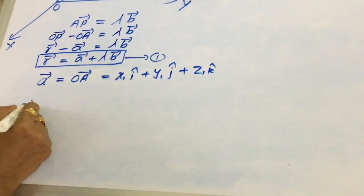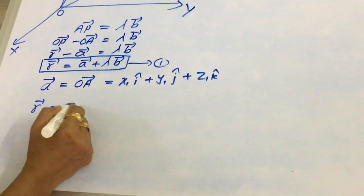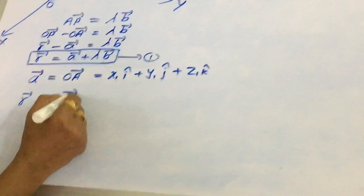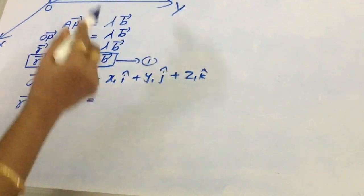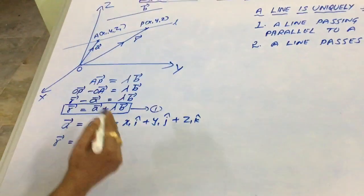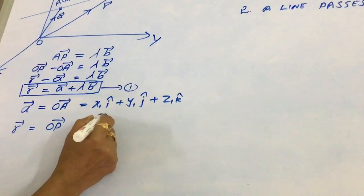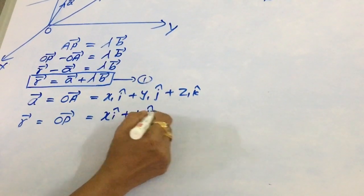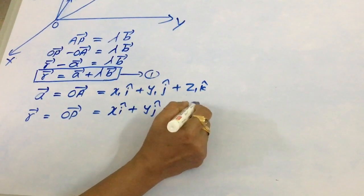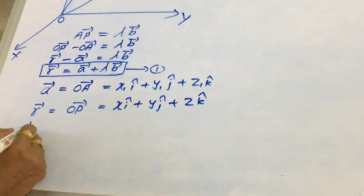Similarly, vector R is OP. The coordinates of P are (x, y, z). Therefore, OP equals x i-cap plus y j-cap plus z k-cap.